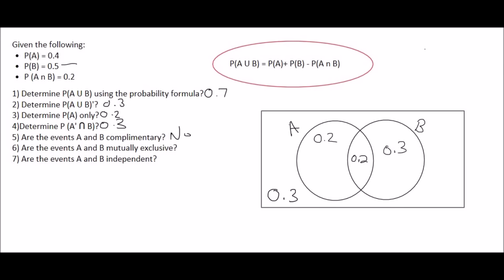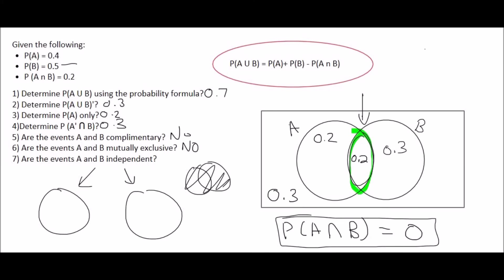Mutually exclusive means that they don't have anything in common. So for example, it looks like that. They don't have a part that interlinks. So what that means is that this part here, the 0.2, that wouldn't be there if they were mutually exclusive. For mutually exclusive, you want the probability of A and B to equal to 0. But this probability of A and B, which is the part in the middle, that is equal to 0.2. So these events are not mutually exclusive.